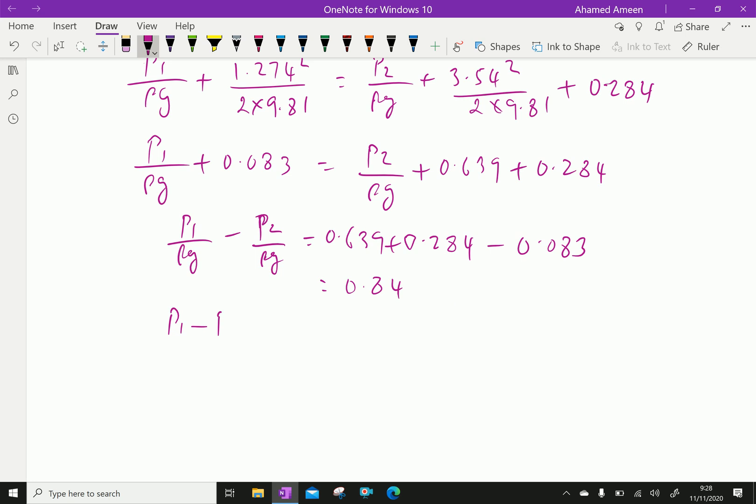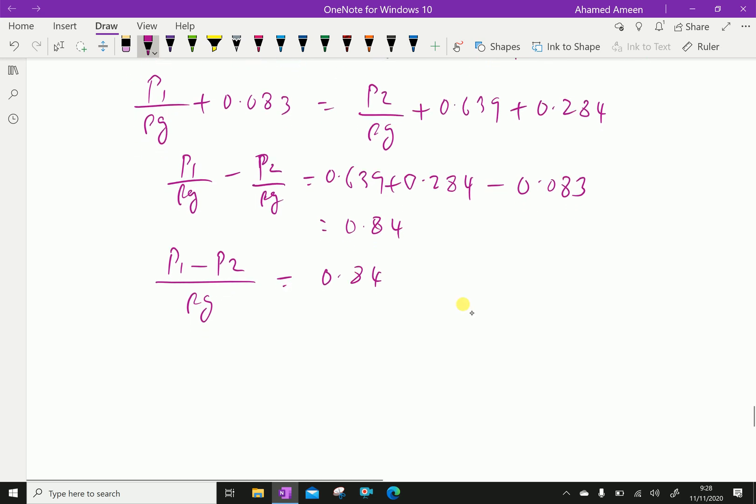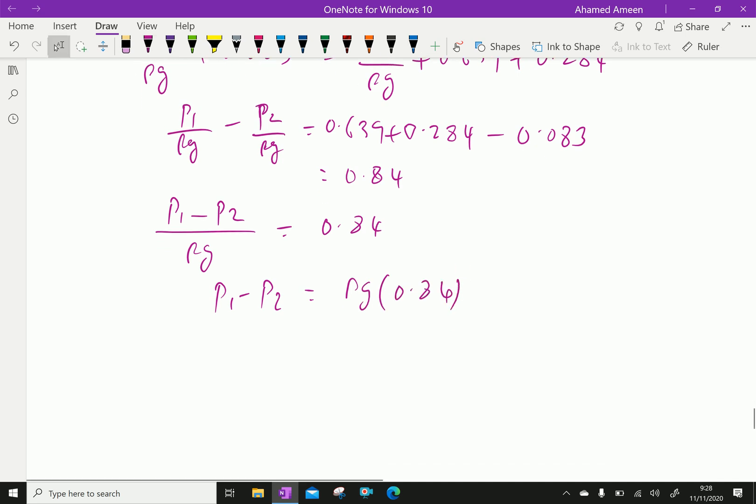P1 minus P2 by rho G equals rho G into 0.84. That's why pressure difference, P1 minus P2 equals rho G times 0.840.